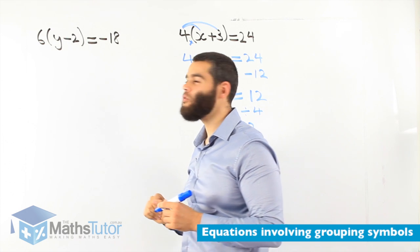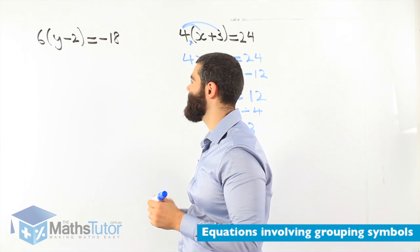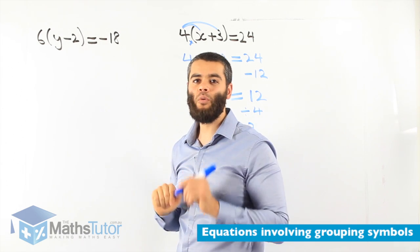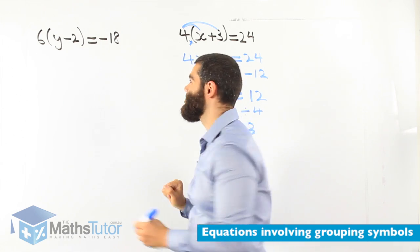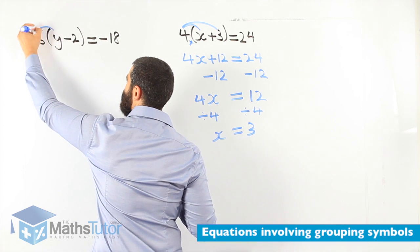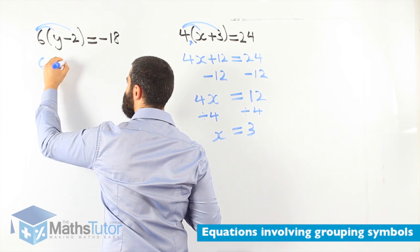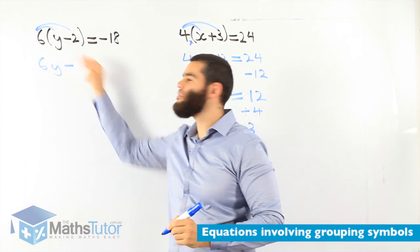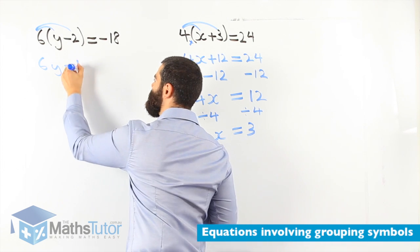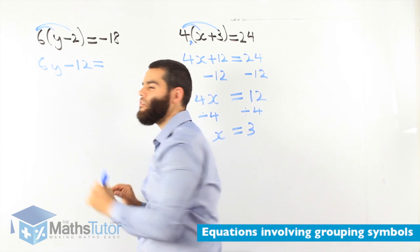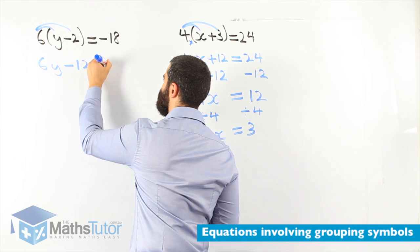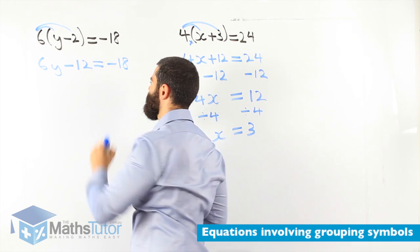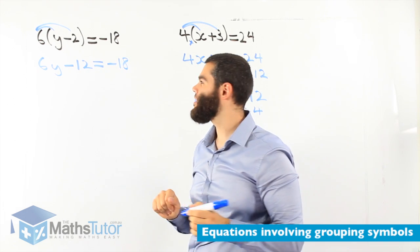Another one. 6, open bracket, y minus 2, close the bracket, equals to minus 18. As soon as you see that, you know straight away I'm going to expand. Let's expand first. 6y minus 6 times negative 2 is negative 12 equals to negative 18. So, 6y minus 12 equals to negative 18.